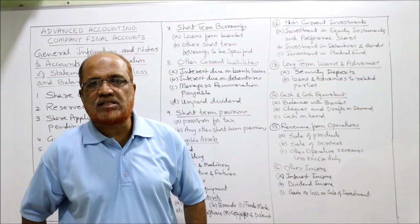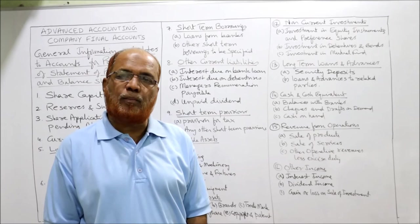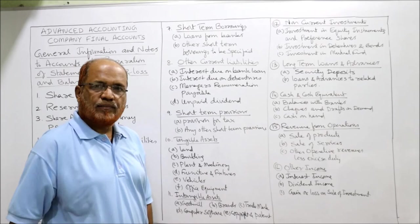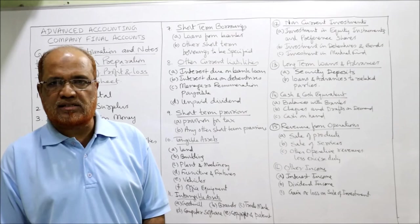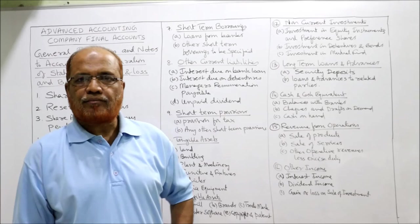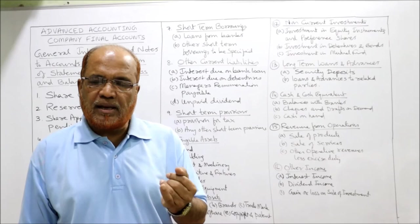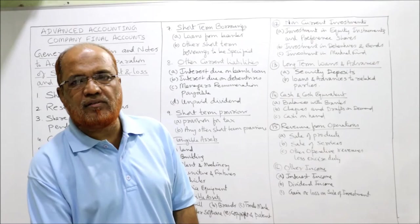Revenue from operations is the first item in the statement of profit and loss. It is the revenue generated from the operating activity of the business. Examples include sale of products, sale of services, and any other operating revenue, minus excise duty. The second item under revenue is other income - this is non-operating income. Examples include interest income, dividend income, or gain or loss on sale of investments.